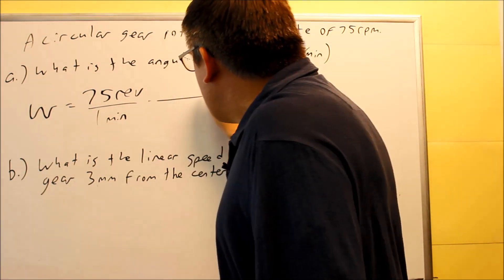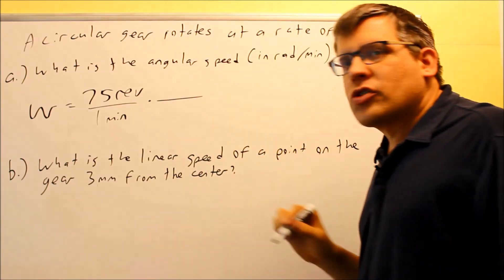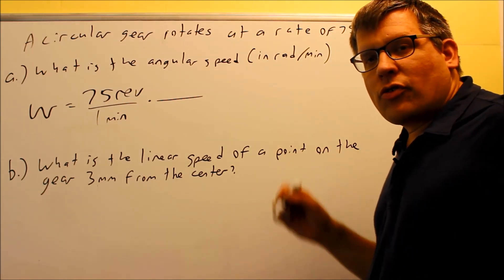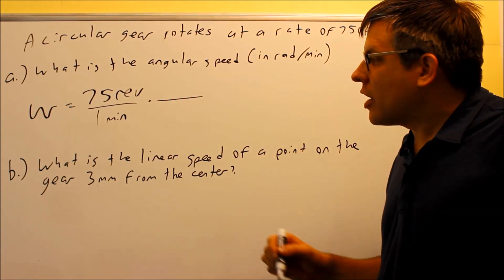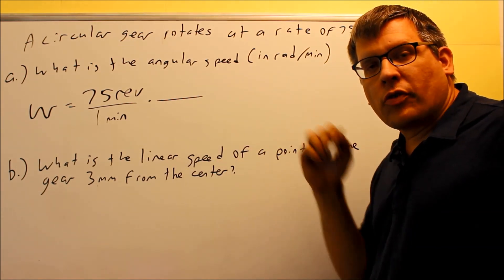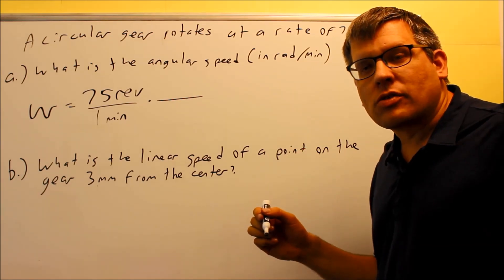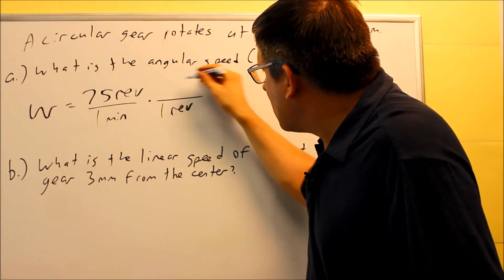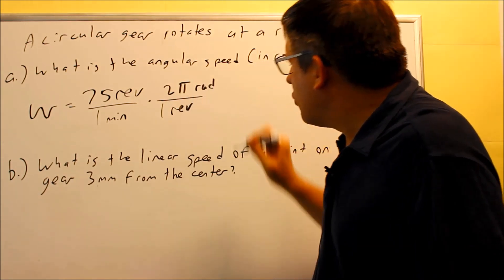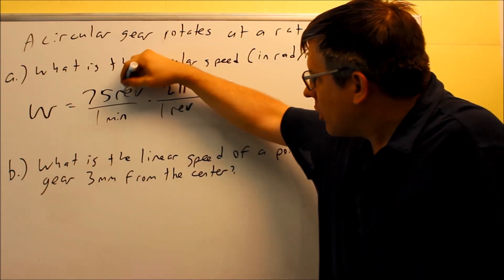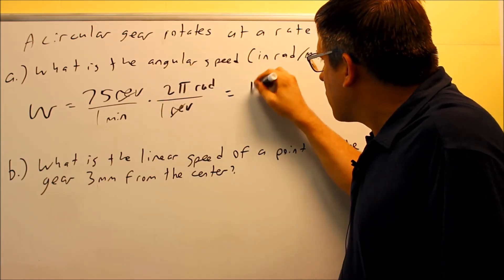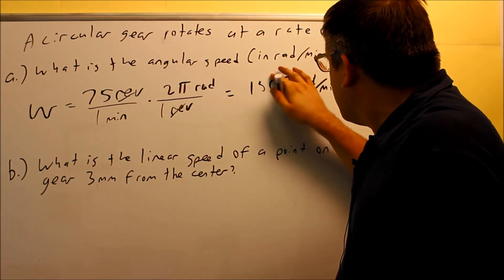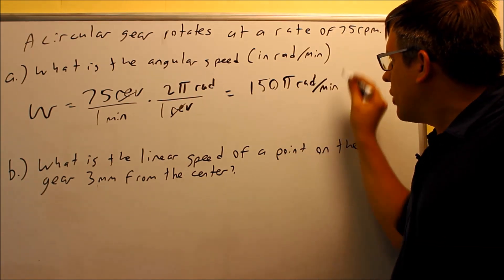Using dimensional analysis, we use the conversion factor: one revolution equals two pi radians. We put revolutions on the bottom so they cancel, and two pi radians on top. Multiplying gives us 150 pi radians per minute — that's our angular speed omega. Radians per minute is exactly what was asked for.